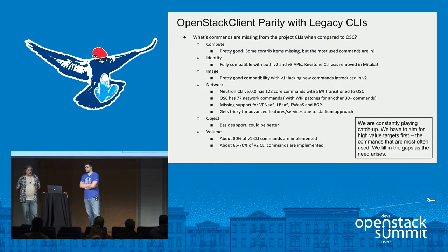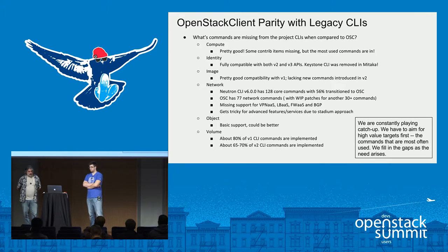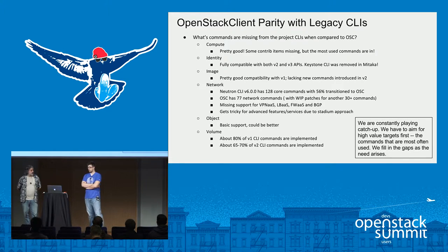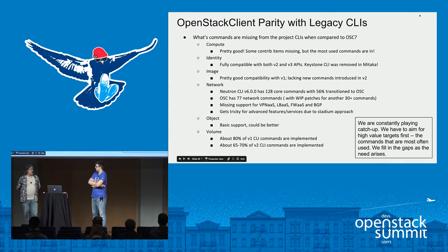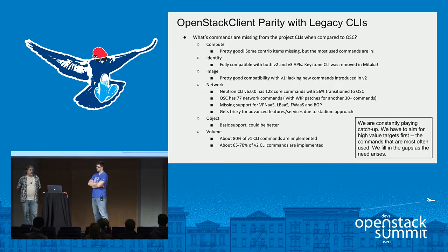Anyway, going back to networking commands — kudos to Rich Tyson and the Neutron team for adding a whole bunch of them. He gave me some numbers: we're about 56% transitioned out of the 128 core commands, with support for about 77 or so, with work-in-progress patches for another 30. Missing support for some of the more advanced stuff — VPN as a service, load balancer as a service, firewall as a service — those are going to be done as plugins. The line is roughly what is core Neutron API goes into the box in OSC; the advanced services will be done as plugins.